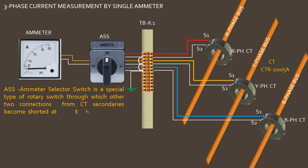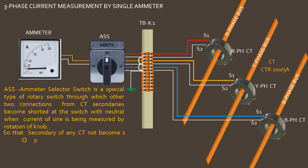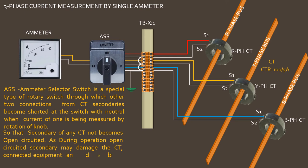With neutral, when current of one line is being measured by rotation of knob of the selector switch, so that secondary of any CT does not become open circuited. As during operation, open circuited secondary may damage the CT, connected equipment, and may be very dangerous to the operator.